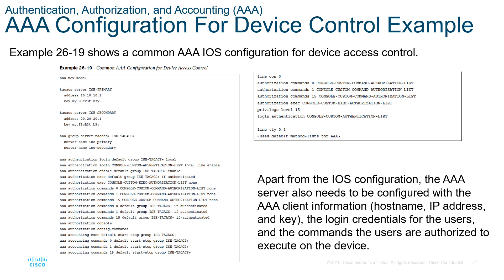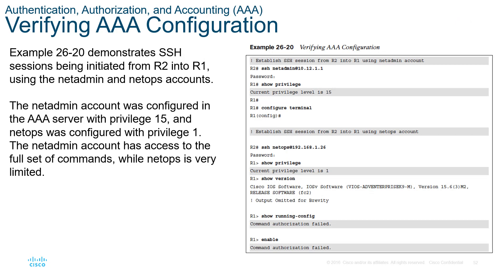Here are the commands at the CLI: set up the AAA new model, configure the TACACS+ server and a secondary server, set up groups, then configure authentication, authorization, and accounting with the appropriate groups. Navigate to the appropriate line you want to secure and apply the default method list for AAA. Verifying AAA configuration involves SSH-ing in and checking what privileges and commands are accessible.